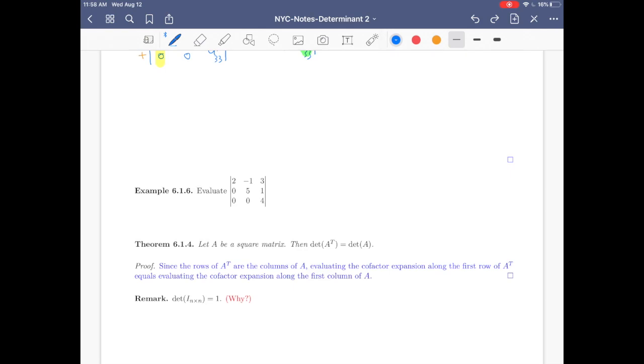Now, let's look at this example. Example 6.1.6. Evaluate this determinant. If you see here, this matrix is indeed, we have a 0 entries here. So this is upper triangular. That's why this determinant equals this product of the entries in the main diagonal. So the answer is just 2 times 20, 40.